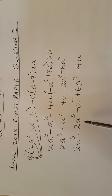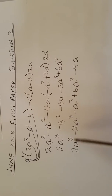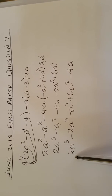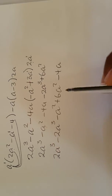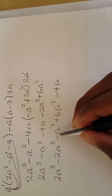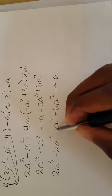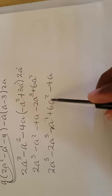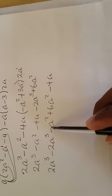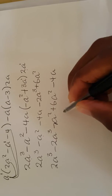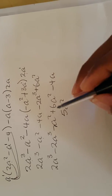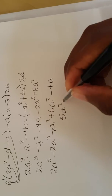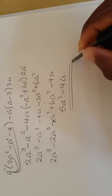When adding or subtracting like terms, the like term variable remains the same — focus only on the numbers. So 2 minus 2 is 0, meaning those a-cubed terms cancel out. For the a-squared terms, there is an invisible 1, so minus 1 plus 6 gives 5a squared. The minus 4a has no like term and remains. So the answer is 5a squared minus 4a, which is option number two.